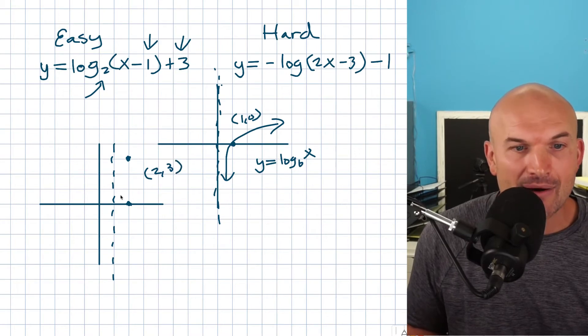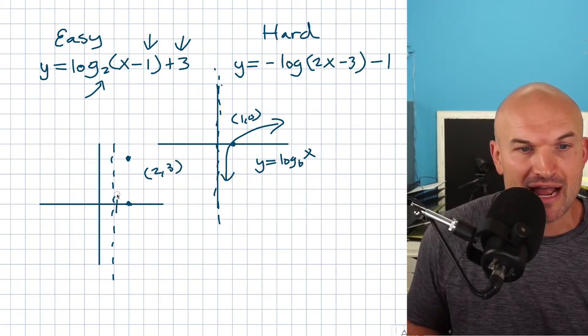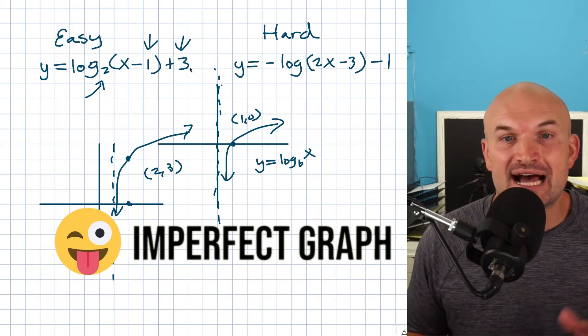So I'll write that at 2,3 and now I can simply just kind of retrace the shape of this graph. Now you kind of have an imperfect graph based on the transformations.